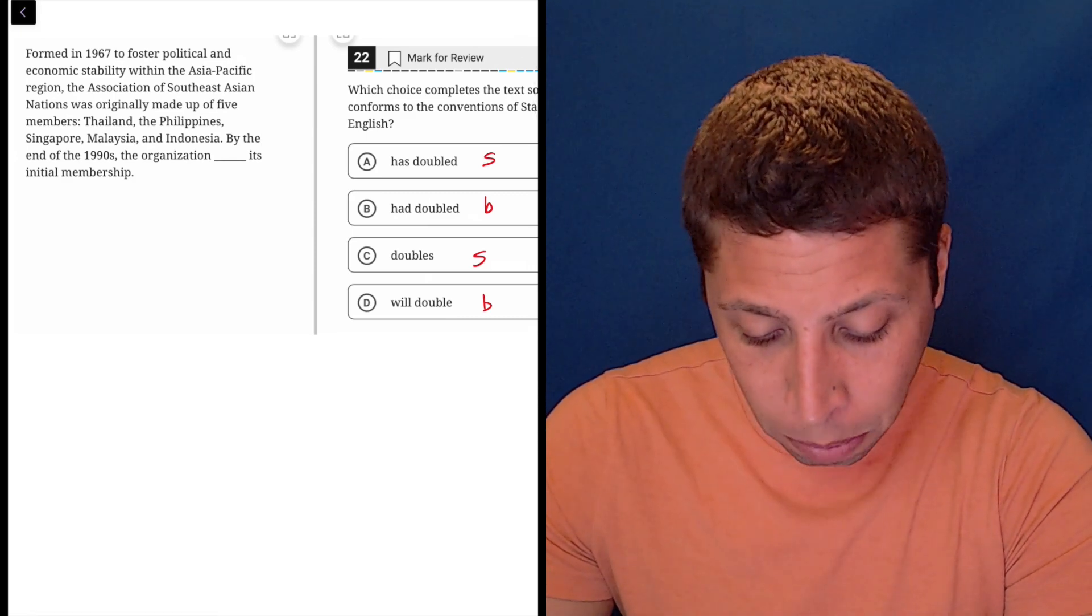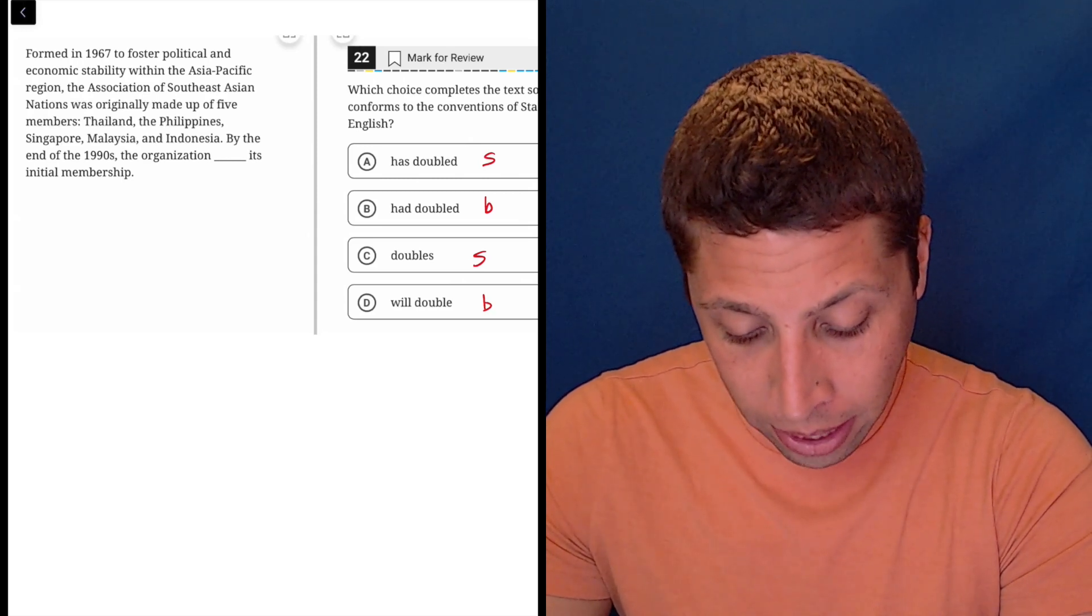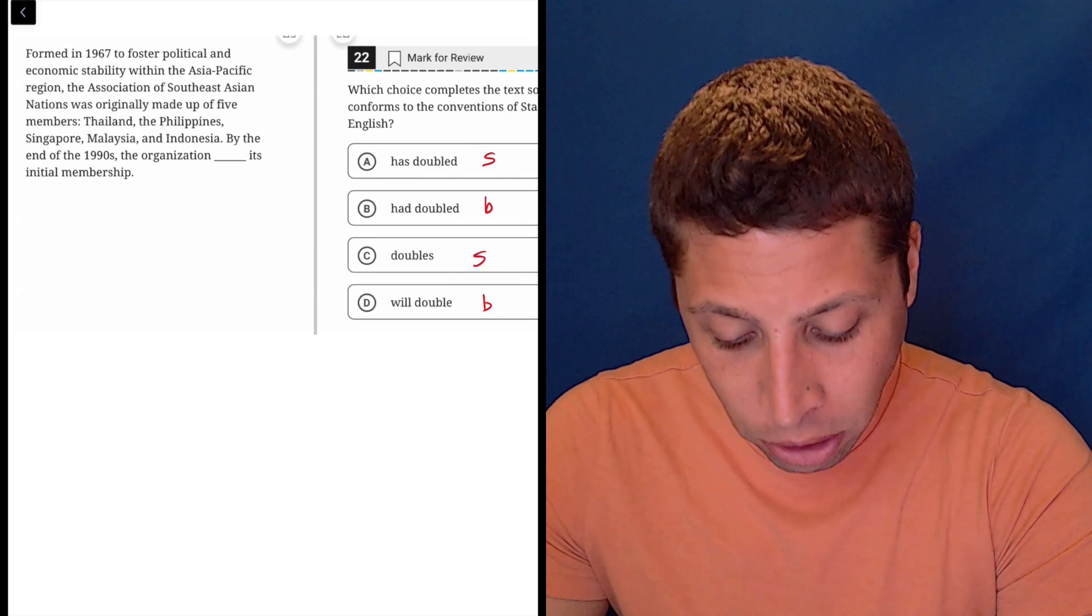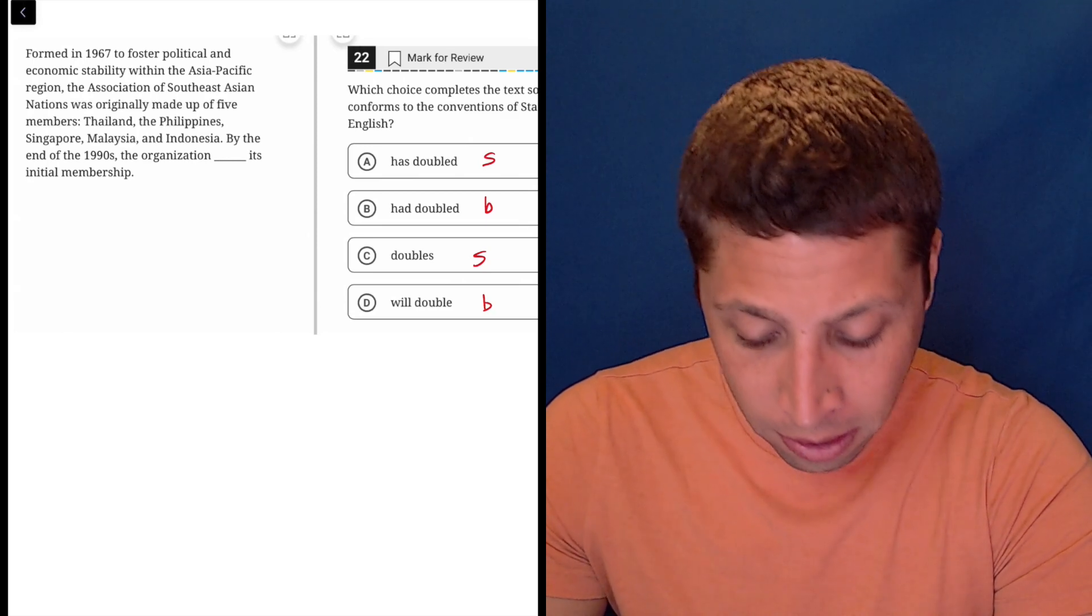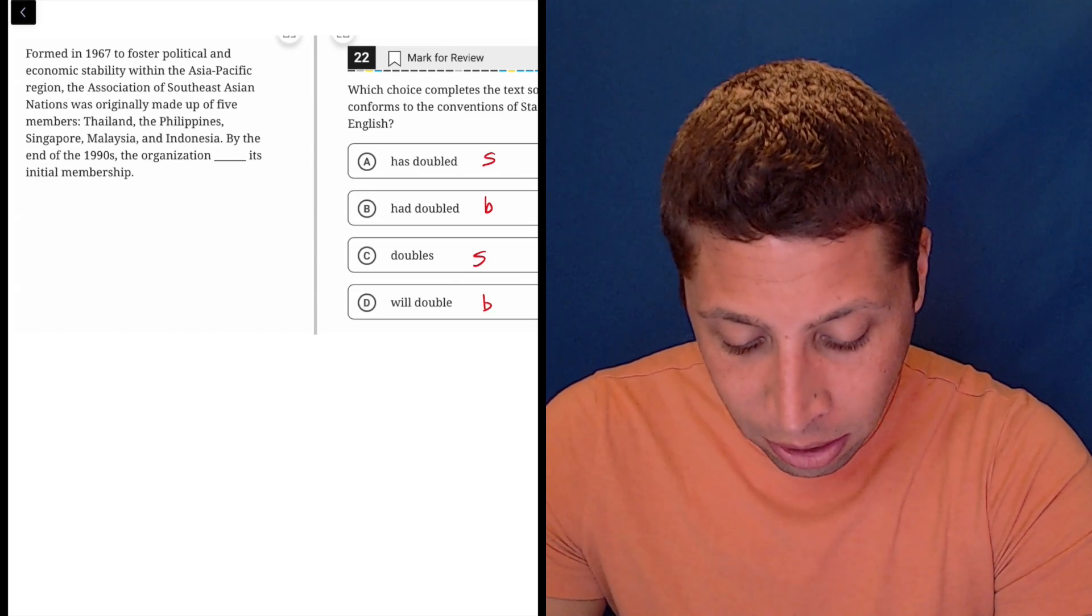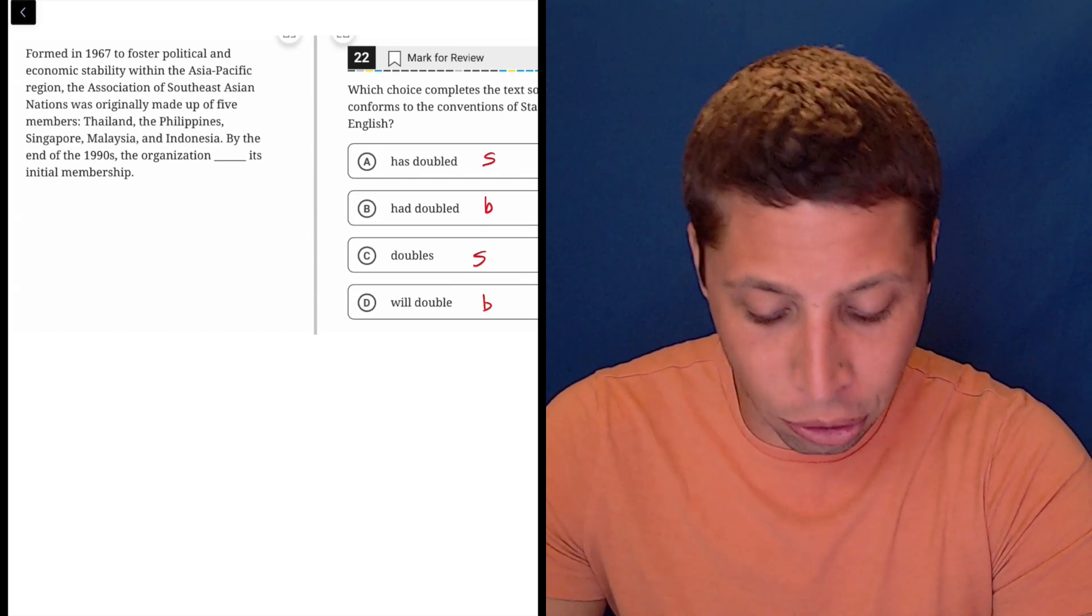Formed in 1967 to foster political and economic stability within the Asia Pacific region, the Association of Southeast Asian Nations was originally made up of five members: Thailand, the Philippines, Singapore, Malaysia, and Indonesia. By the end of the 1990s, the organization blanked its initial membership.